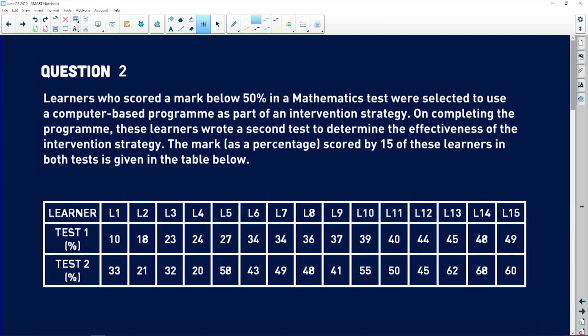Okay, question two is also going to be statistics, but it's going to look a little bit more at variation and standard deviation. So let's take a look. It says learners who scored a mark below 50% in a mathematics test were selected to use a computer-based program as part of an intervention strategy.